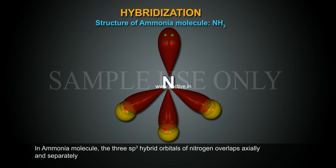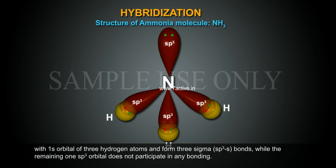In ammonia molecule, the three sp3 hybrid orbitals of nitrogen overlap axially and separately with one s orbital of three hydrogen atoms and form three sigma sp3-s bonds.